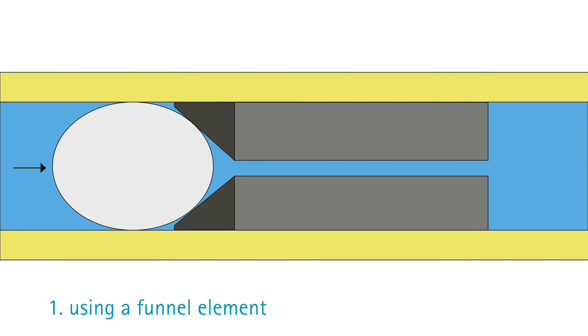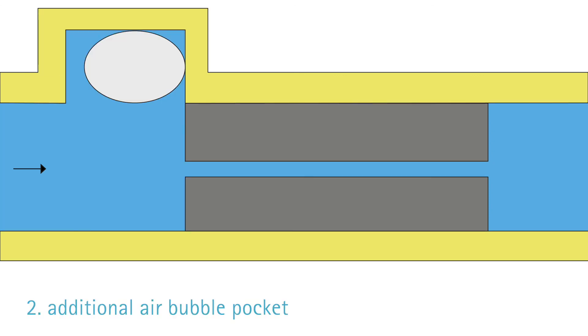A funnel element allows the deformation of the air bubble as it passes through. Or bubbles may be pushed into an additional air bubble pocket where they cannot block the restrictor.